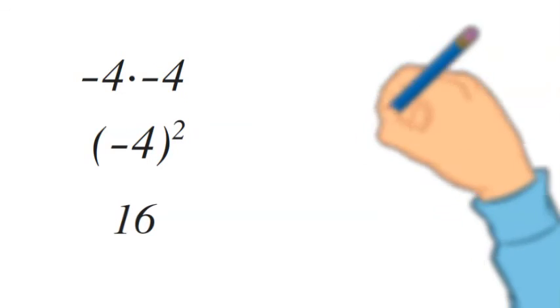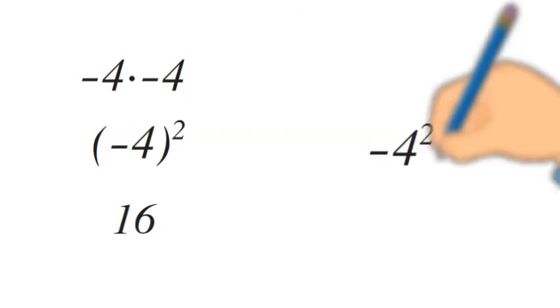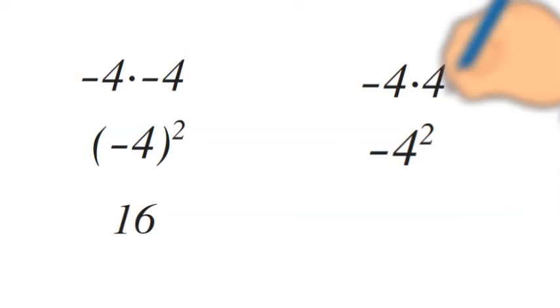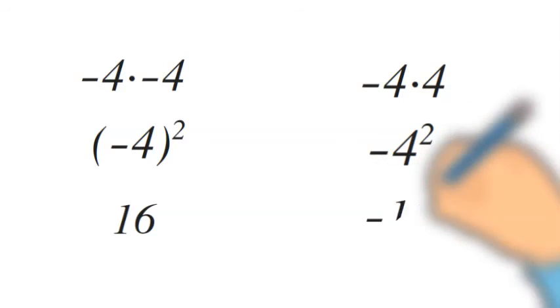Now, what would happen if we didn't put the negative 4 in parentheses? We just wrote negative 4 squared. Well, that would be the negative of 4 times 4, which is just negative 16.